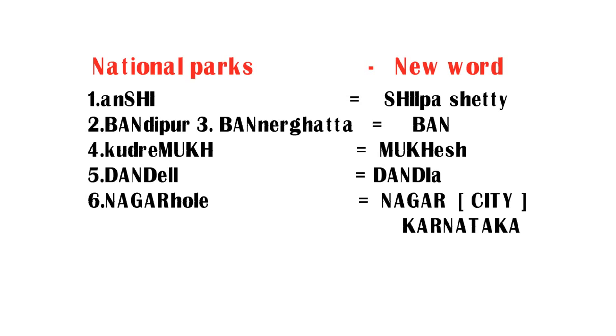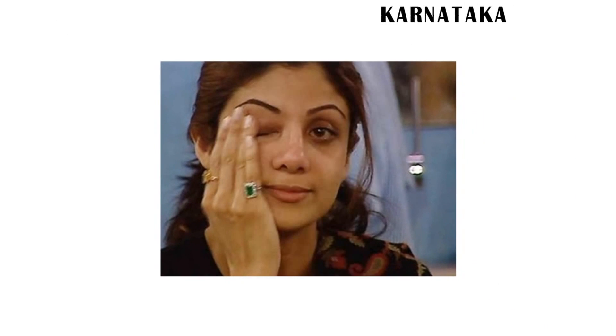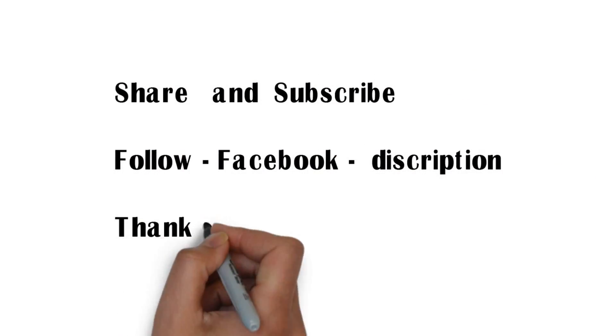Now I'm going to show the images of this story. Here you can see Shilpa Shetty is crying because her team is banned from IPL — Shilpa stands for Anshi National Park and BAN stands for Bandipur and Bannergatta. Here you can see Mukesh Ambani doing Dandia with Nita Ambani — Mukesh stands for Kudrimukh National Park and Dandia stands for Dandeli National Park. Friends, share my tricks with your friends and be helpful. Thank you — follow my tricks on Facebook, link in description.